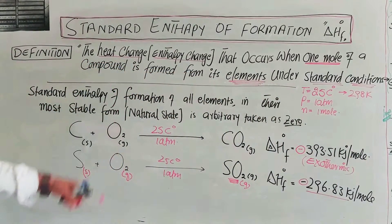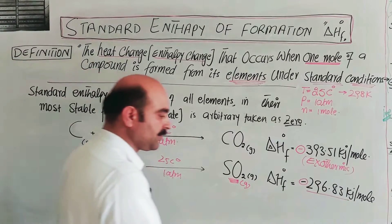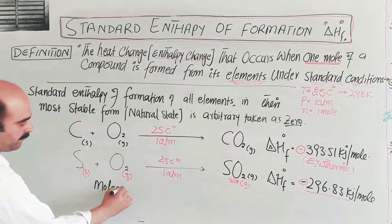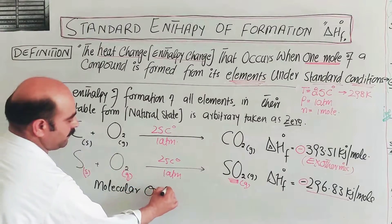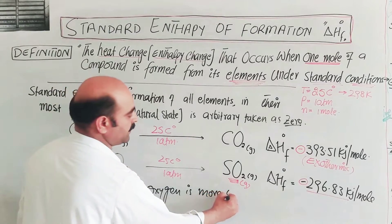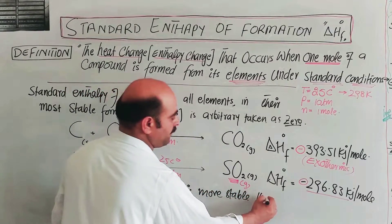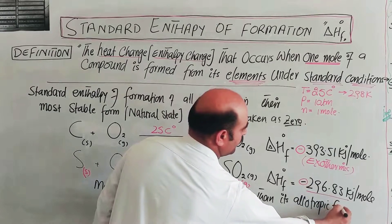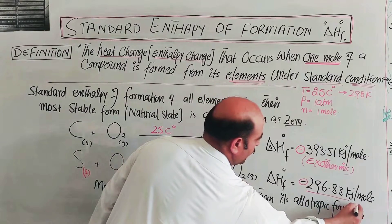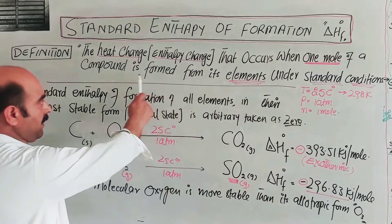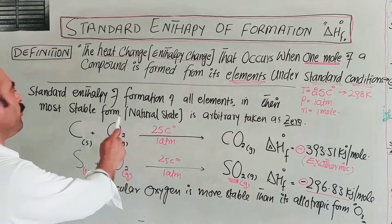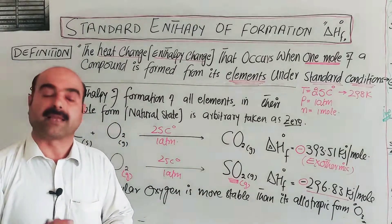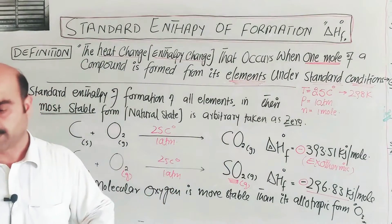Regarding allotropes, molecular oxygen O₂ is actually more stable than its allotropic form ozone O₃. So the most stable state, written in the textbook as the natural state, is used when calculating the standard enthalpy of formation. The enthalpy of formation uses the most stable and natural elemental state as the reference.